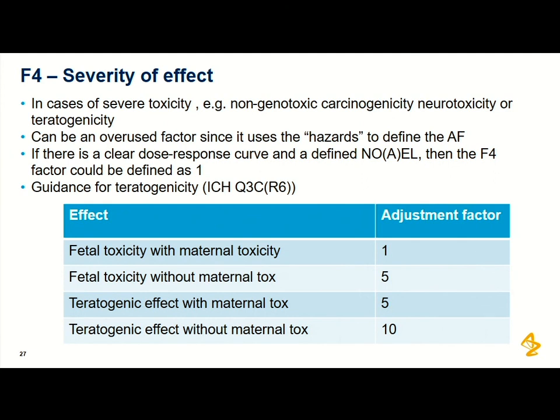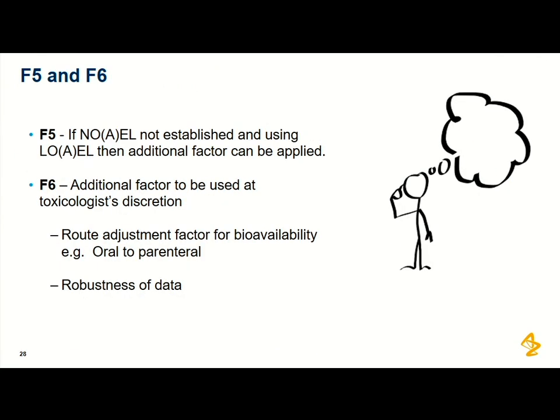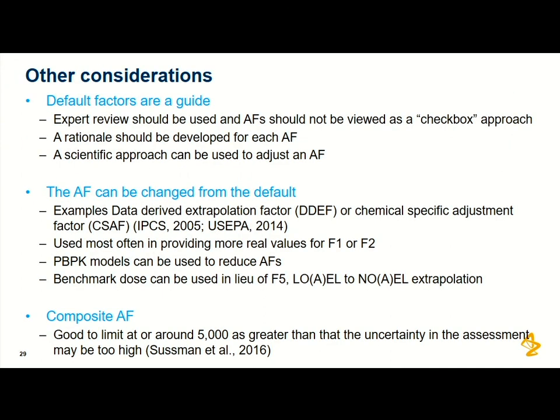The default factors are a guide — we should be using scientific judgment to decide what values to use, not treating them as a checkbox. You need to develop a rationale for each adjustment factor and document it so it's clear why you chose each value. If things change over time and additional data alters your risk assessment, that documentation allows you to revisit and update it as you move through development.